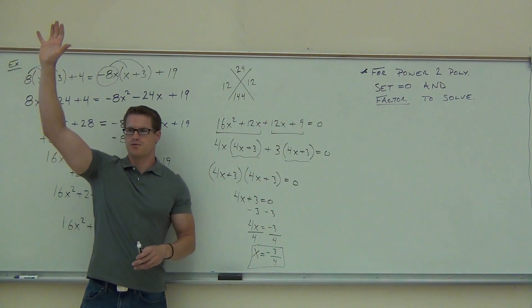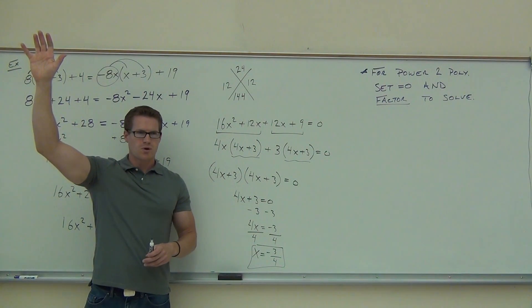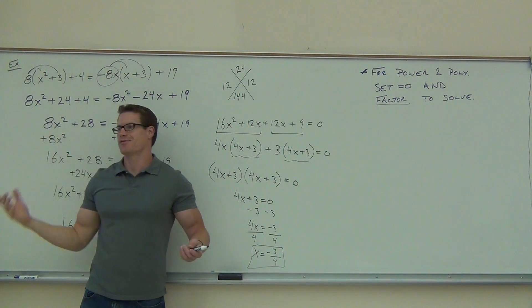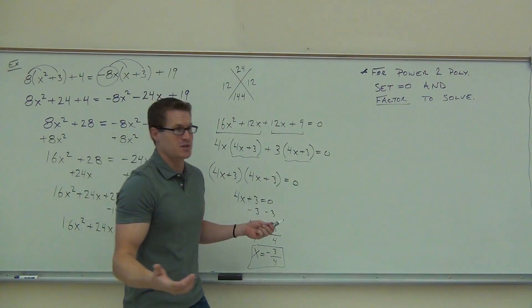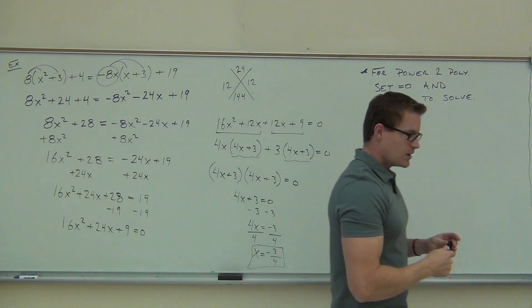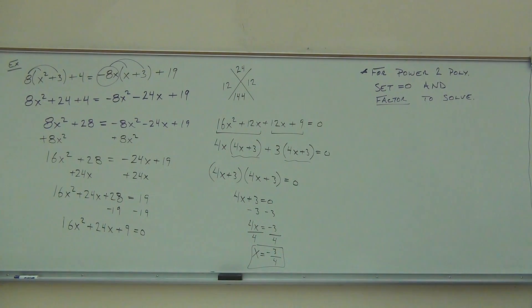By a show of hands, how many people got negative 3/4? Could you check your work by the way? It would be kind of a pain, right? I mean, you have to plug that into that. But you could do it. A calculator would do it pretty easily. It's not too bad. Well, I'm glad you feel good with that example.